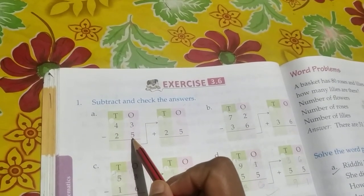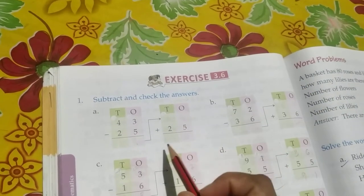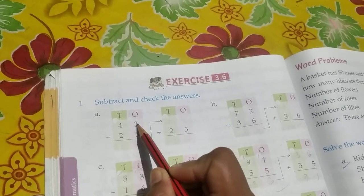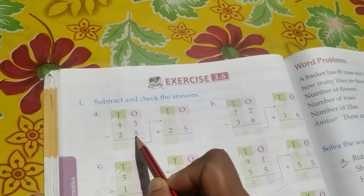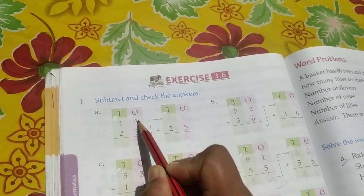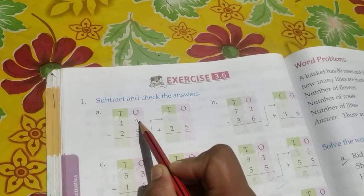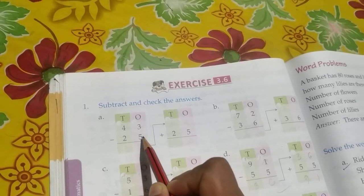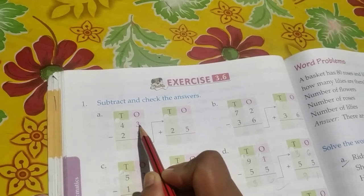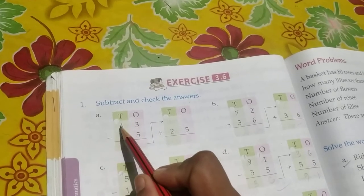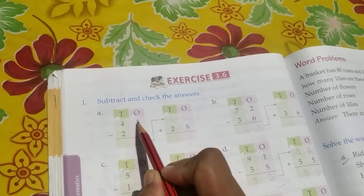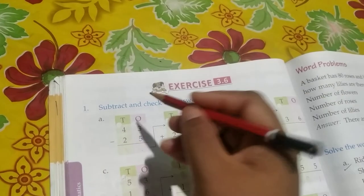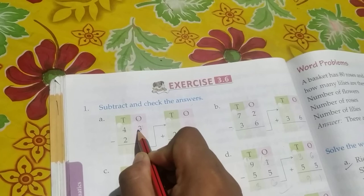Now let us do 43 minus 25. First, we are going to do from the ones place, that is 3 minus 5. Can we minus 5 from 3? No, we cannot, because 3 is the smaller number. So in order to subtract, we have to make this 3 as the greater number by borrowing 1 from the tens place, from the 4.